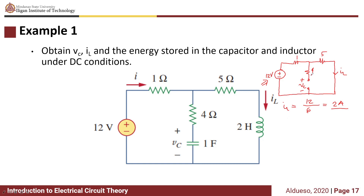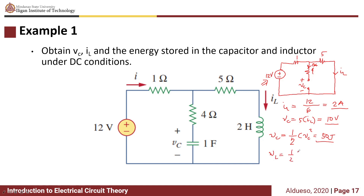Solving for V_C: since the current flowing through the 4-ohm resistor is zero, the voltage V_C is just equivalent to the voltage across the 5-ohm resistor, which is 5 times I_L, giving us 10 volts. The energy stored in the capacitor equals ½CV_C² equals 50 joules. For the inductor, the energy stored equals ½LI_L² equals 4 joules.